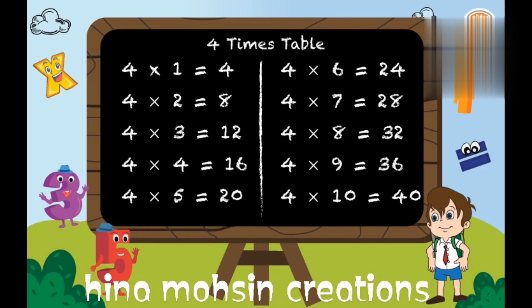Now repeat it again with me. Four ones are four. Four twos are eight. Four threes are twelve. Four fours are sixteen. Four fives are twenty.